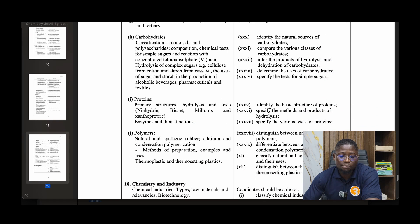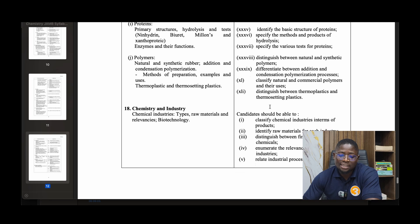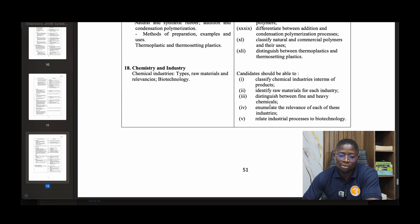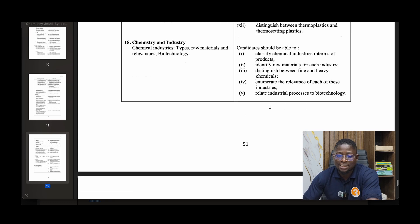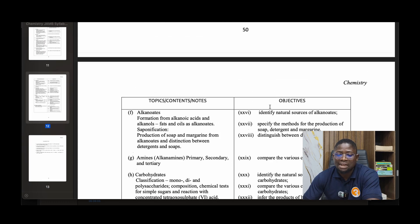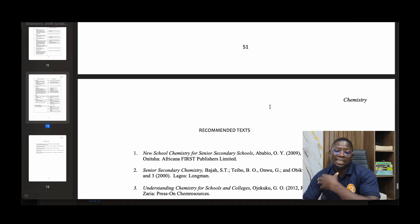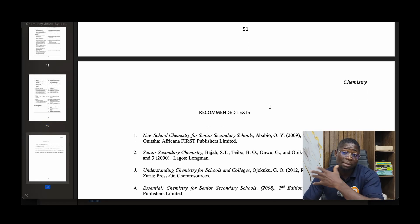Carbohydrates, proteins, and polymers. Number nineteen: Chemistry and industry - chemical industries, types, raw materials, relevance, biotechnology, and the like. All of these topics are completed on the OTU Schools YouTube channel to help you succeed in your exam and pass at once.